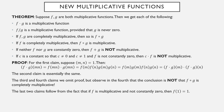The last two claims follow from the fact that if f is multiplicative and not constantly zero, then f(1) = 1. If both f and g are multiplicative and not constantly zero, then f(1) = g(1) = 1, but (f+g)(1) = 2, which is not 1 — so the sum is not multiplicative. Similarly, if c is not 0 and not 1, then c·f(1) = c ≠ 1, so c·f is not multiplicative.